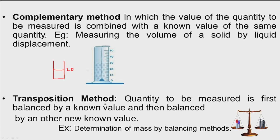In the transposition method, the quantity to be measured is first balanced by a known value and then balanced by another known value. By this method, we come to know the value of the physical quantity to be measured. One example is determination of mass by the balancing method. The first four methods are very important from the metrology point of view.